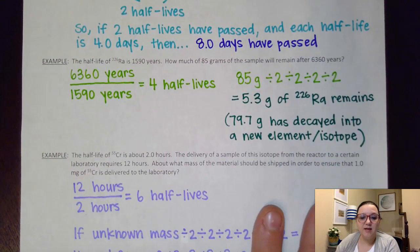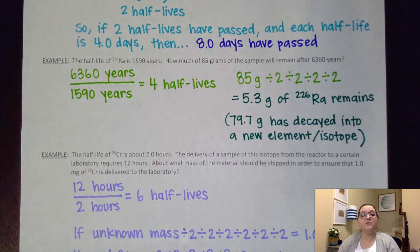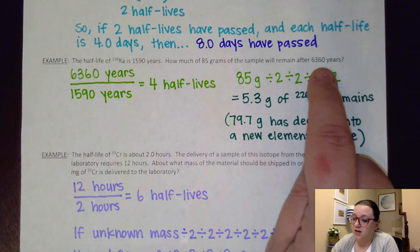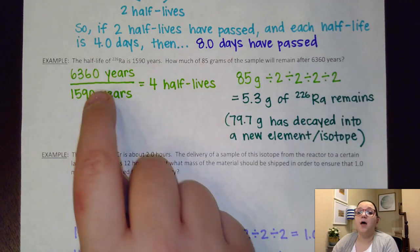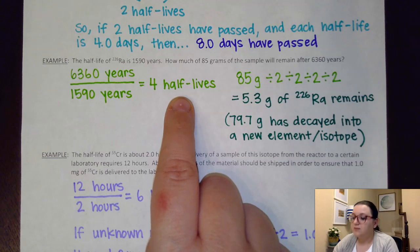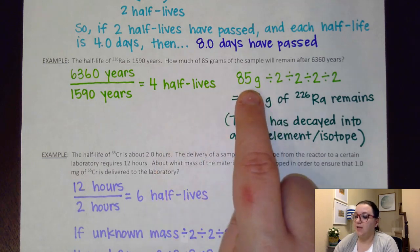Our next one says, the half-life of ²²⁶Ra is 1,590 years. How much of 85 grams of the sample will remain after 6,360 years? I see here they're asking me to solve a mass. How much of the 85 grams will remain? So if they're asking me about a mass, then that means I need to use the times to figure out the number of half-lives. So I see that each half-life is 1,590, but 6,360 have passed. So if I divide those, that would get me four half-lives. A whole number of half-lives, which makes this really easy then to solve.